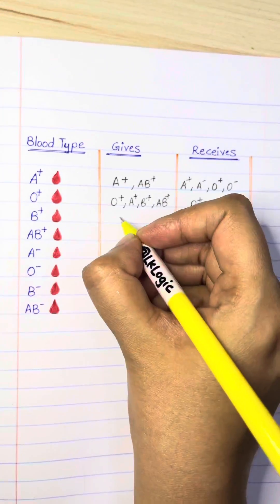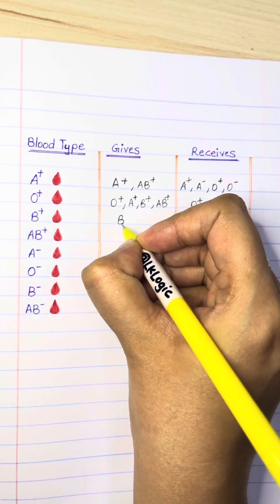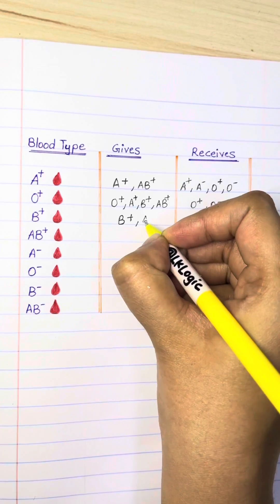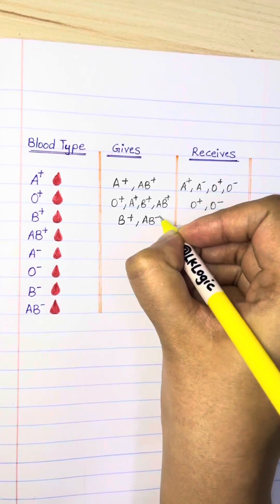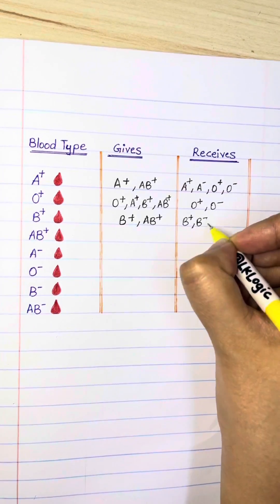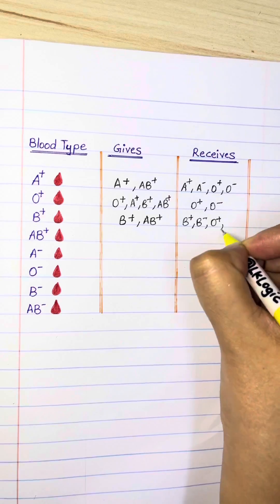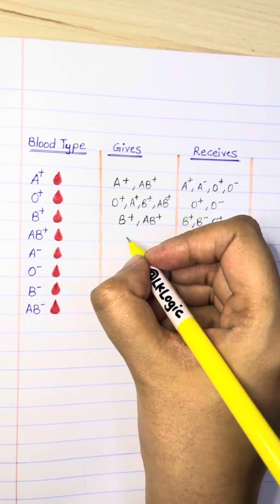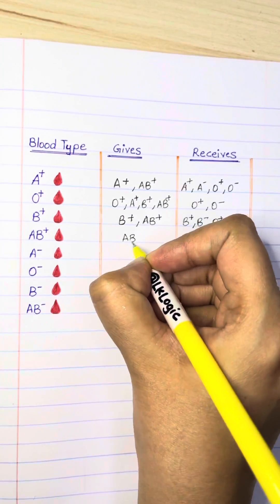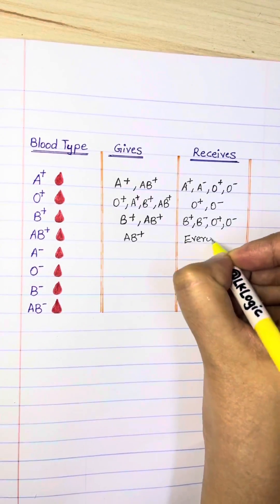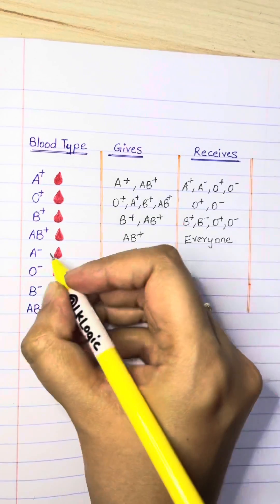B positive can donate to B positive and AB positive, and can receive from B positive, B negative, O positive, and O negative. AB positive can give to AB positive and receive from everyone.